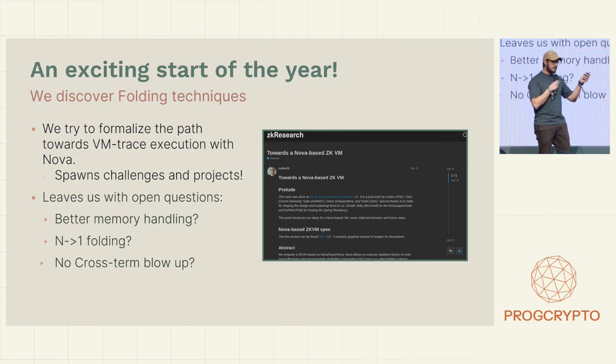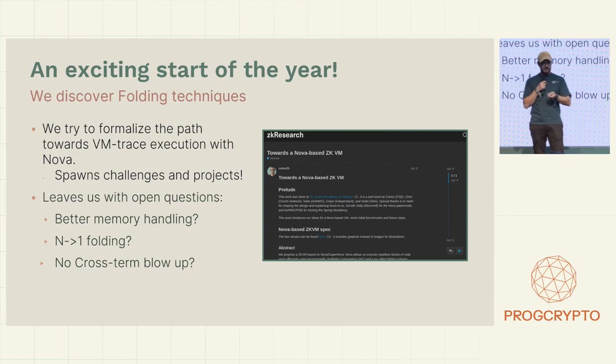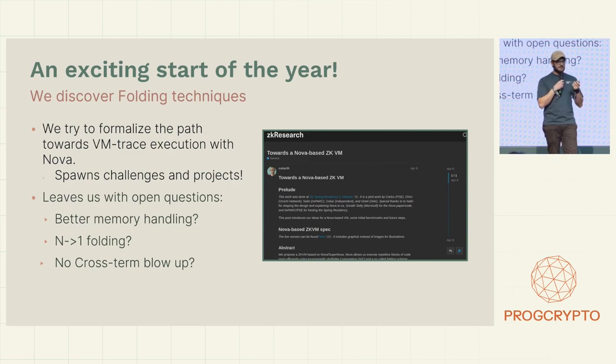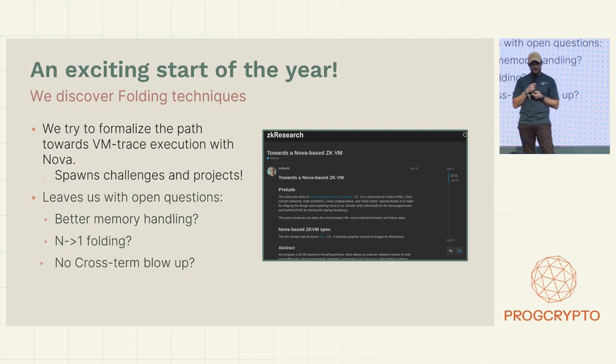That left us with some questions. First, N-to-1 folding. Second, better memory handling. And can we finally have something that doesn't blow up for the cross-term checks?